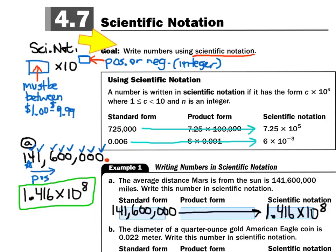So I write the number in scientific notation: 1.416 times 10 to the 8th power. In standard form it looked like 141,600,000, but in scientific notation it looks like 1.416 times 10 to the 8th.